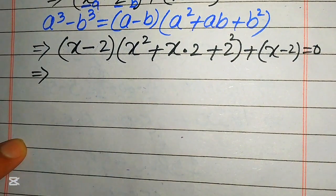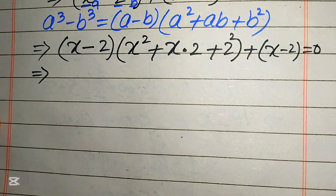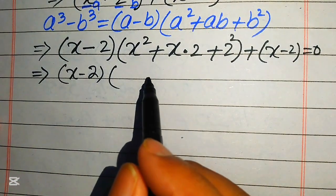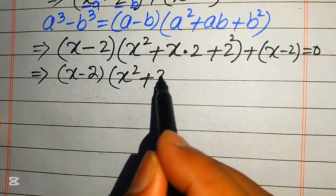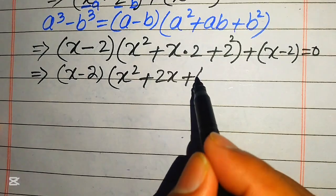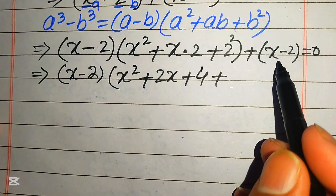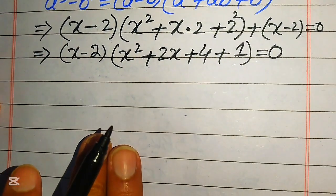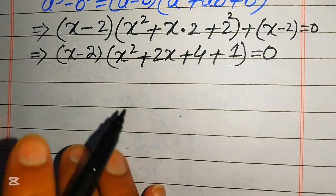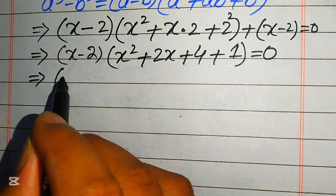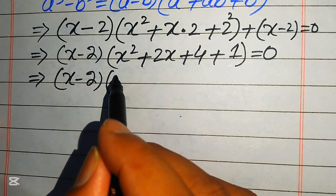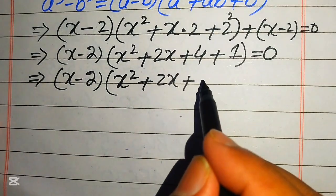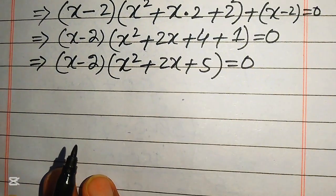In the next step we focus on both terms and see that x minus 2 is a common factor. Taking x minus 2 as common, we get the remaining values as x squared plus 2x plus 4, plus 1, and this whole equation equals 0. Adding the like constant terms, 4 plus 1 becomes 5, giving us x minus 2, times x squared plus 2x plus 5, equals 0.